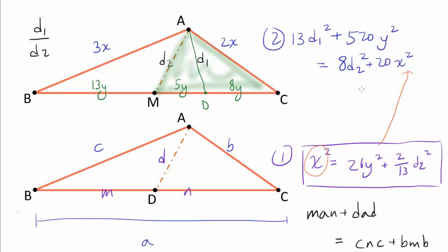Now, from here, the only thing left for us to do is to plug this thing into X squared, which, first of all, makes X squared go away, but it also makes Y squared to go away, because 20 times 26 is 520. So, we're going to have 520Y squared on both sides. So, we are going to be left with 13D1 squared. 8D2 squared stays the same, and we're going to have 40 over 13D2 squared, this thing times 20. From here, if we multiply by 13 to every single side, we get 169D1 squared is 104D2 squared plus 40D2 squared.